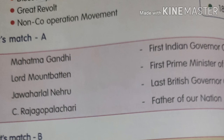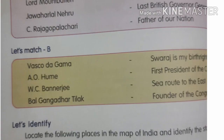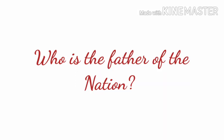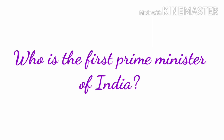Next, match Column A with Column B — this is homework for you. Also, locate the following places in the map of India and identify the states: Sabarmati Ashram, Jallianwala Bagh, Kheda, and Mumbai. For homework: first, who is the Father of the Nation? Second, who is the first Prime Minister of India?